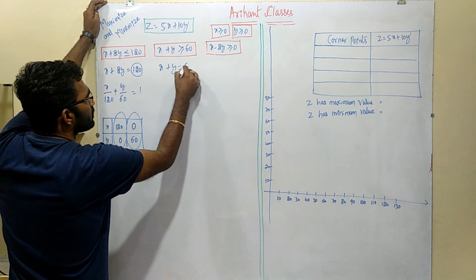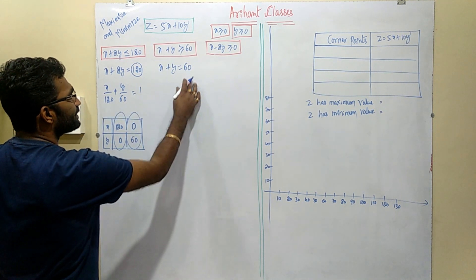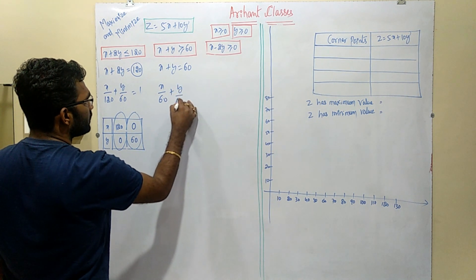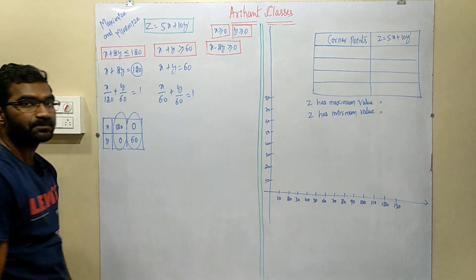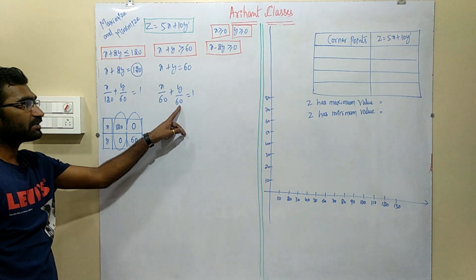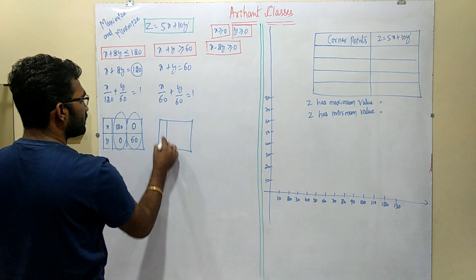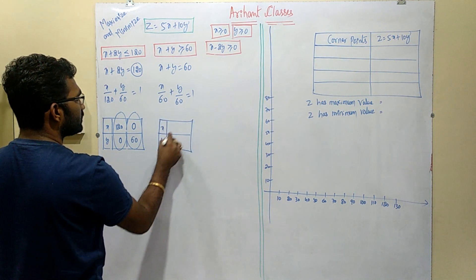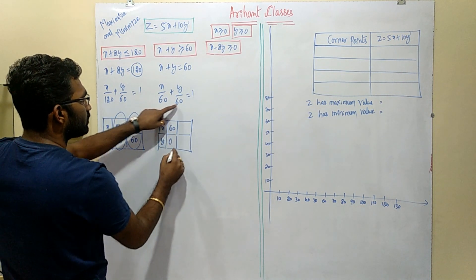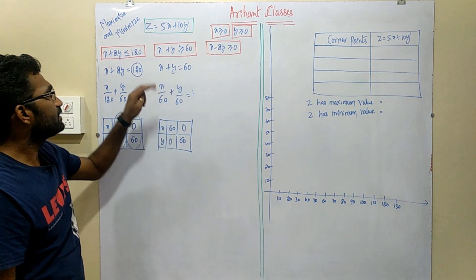For the second constraint, x plus y equals 60. To get it equal to 1, divide throughout by 60. Therefore x divided by 60 plus y divided by 60 equals 1. This is the straight line cutting the x-axis at 60 and the y-axis at 60. So the points are (60, 0) and (0, 60).